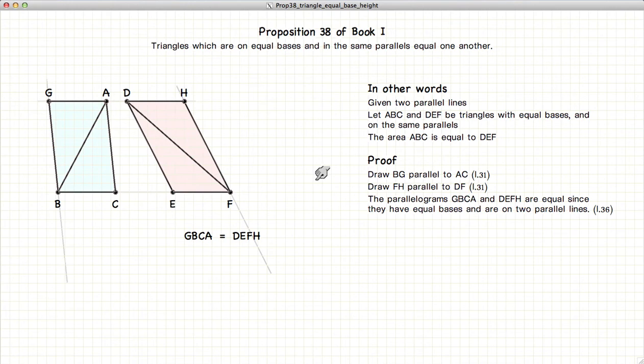Now, if we look at the two resulting parallelograms, according to Proposition 36, these two parallelograms are equal in area.